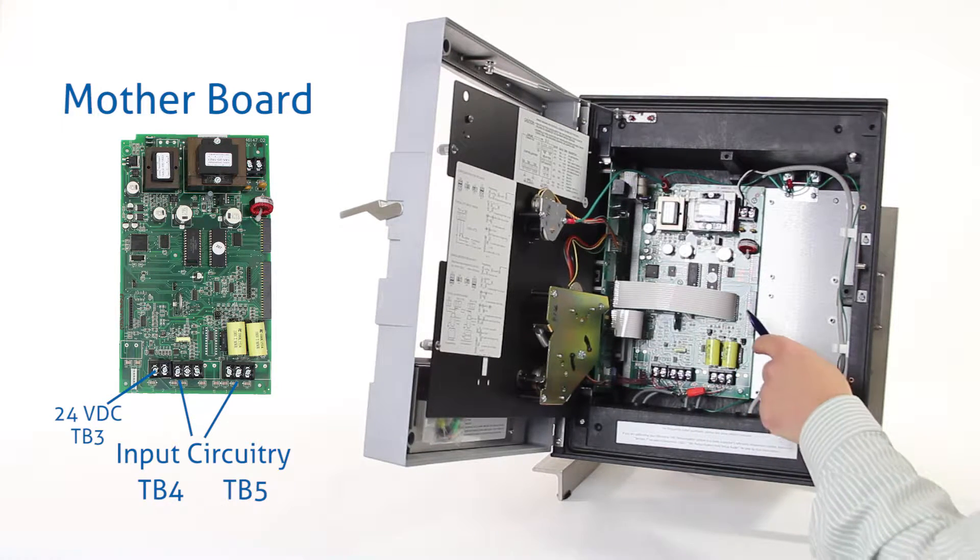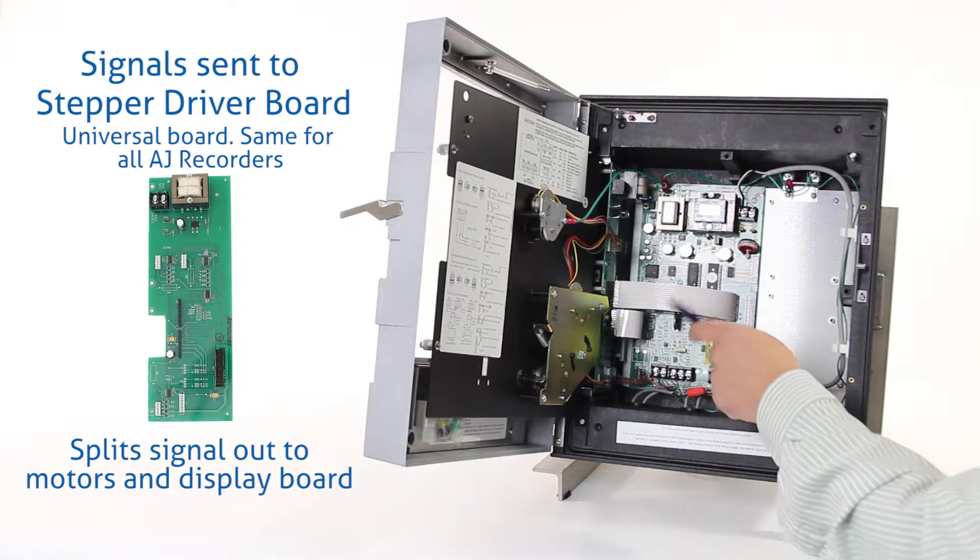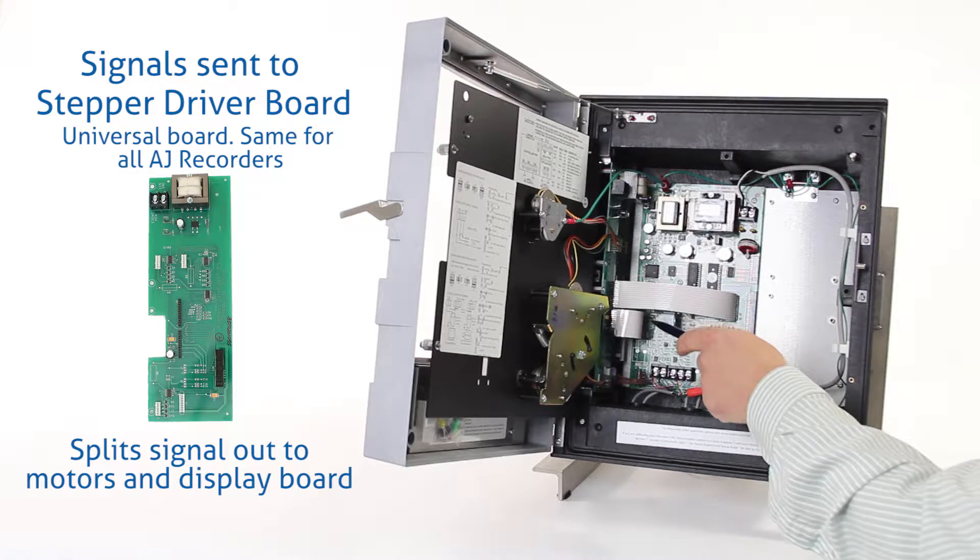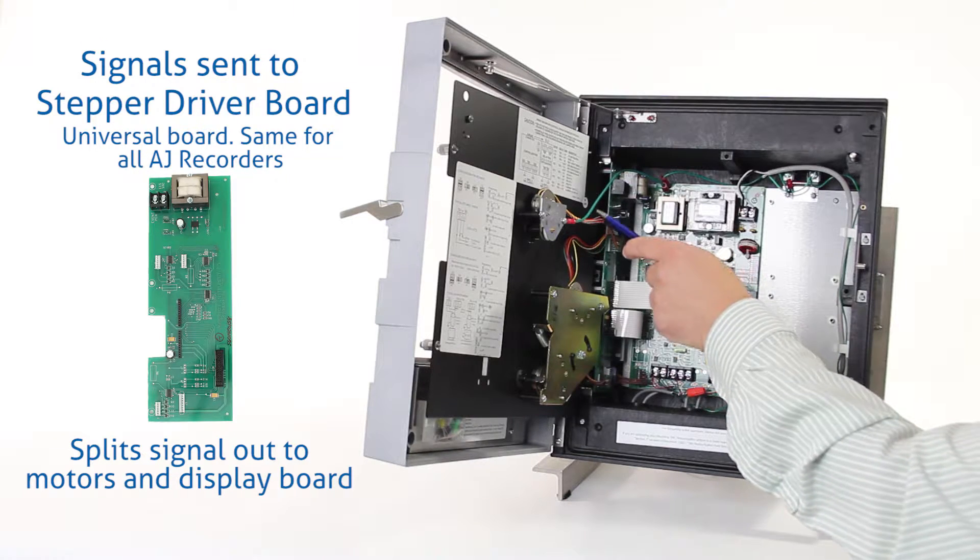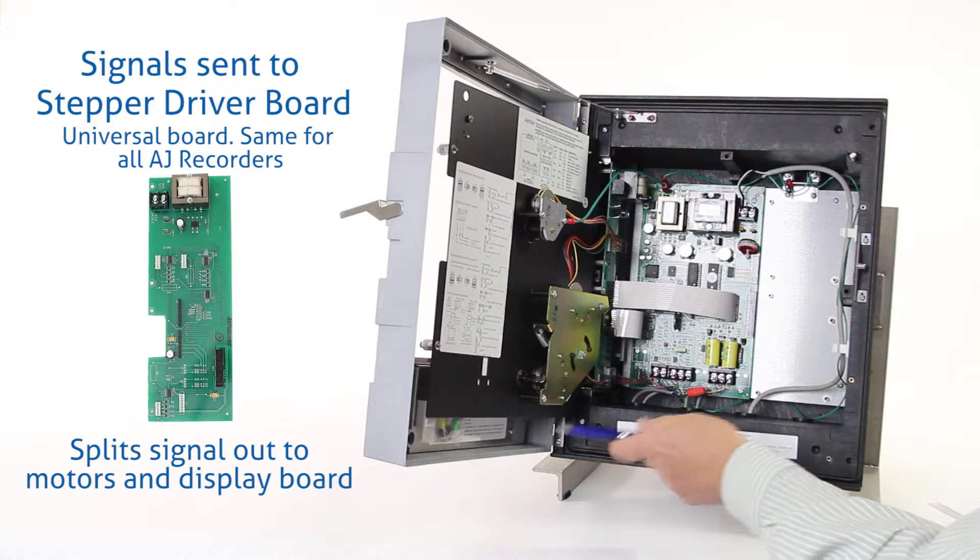When the signals come in, they're sent over to the stepper driver board on the left-hand side of the unit. The stepper driver board takes and splits the signal up and sends the signal out to all of the motors and also out to the main display board.